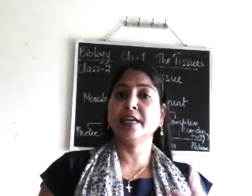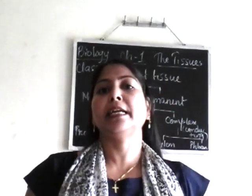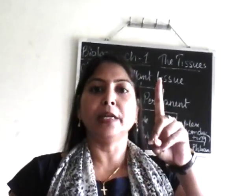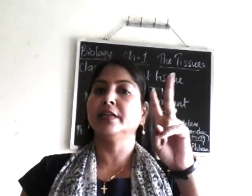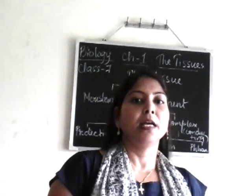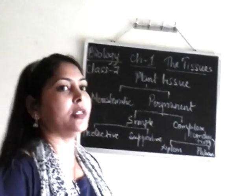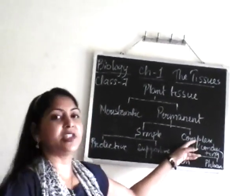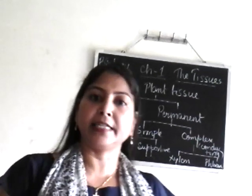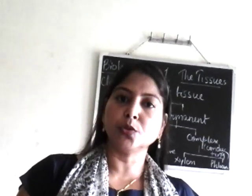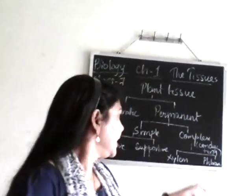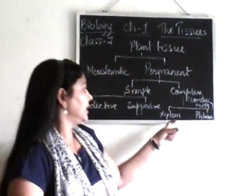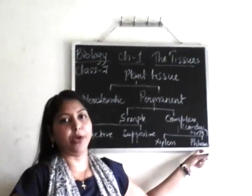There are two conducting tissues: one is known as phloem and another one is known as xylem. As you can see on the board, complex tissue is also known as conducting tissue and also known as vascular tissue. This conducting tissue is of two types: xylem and phloem.